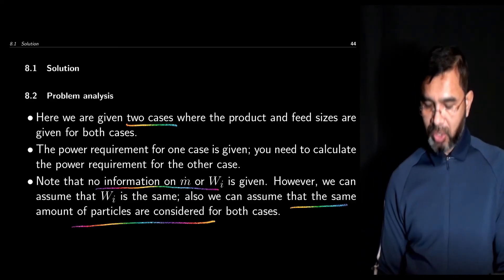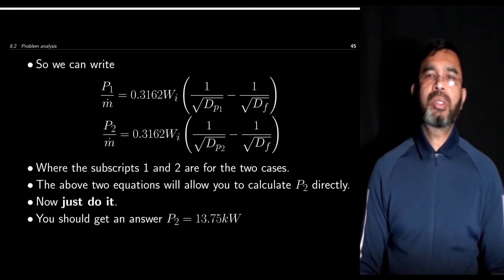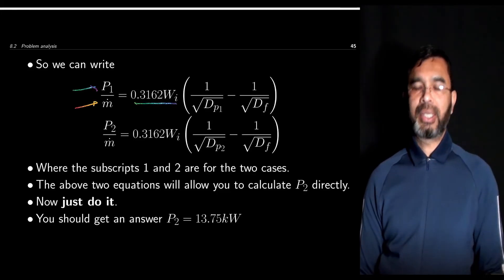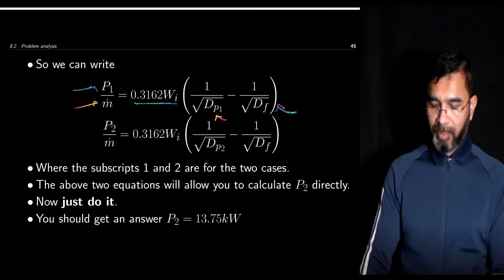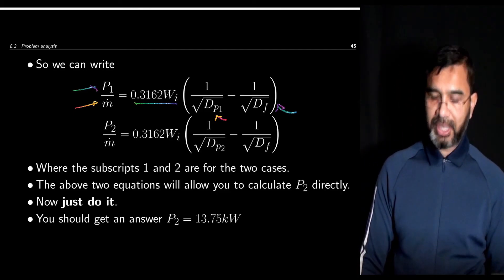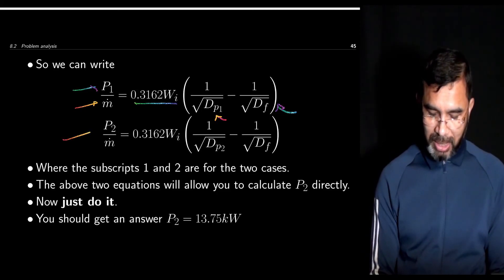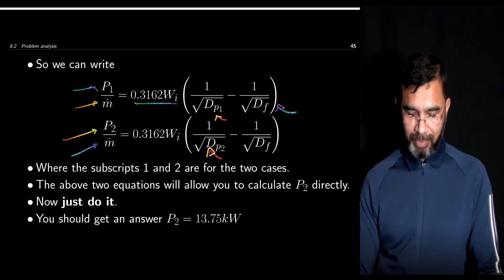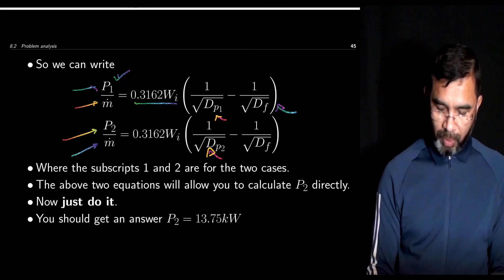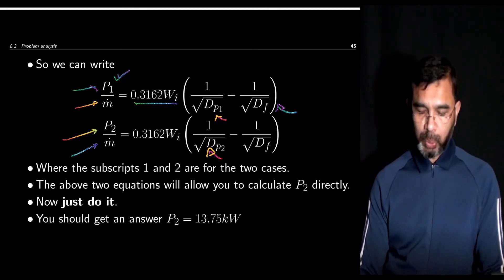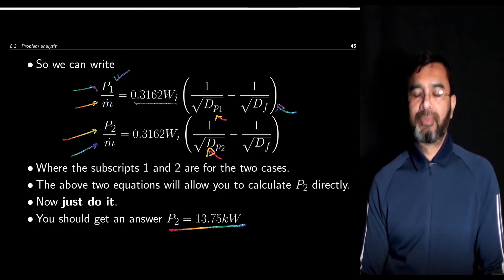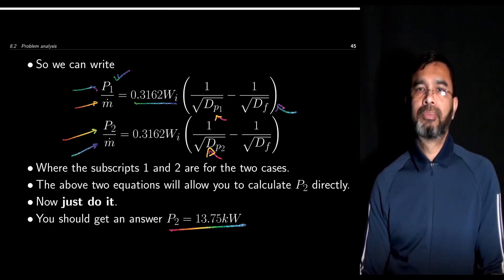With those valid assumptions, for Case 1: P₁/ṁ equals 0.3162·W_I times (1/√d_{P1} minus 1/√d_F). For Case 2: P₂/ṁ equals 0.3162·W_I times (1/√d_{P2} minus 1/√d_F). Since we know P₁, we simply divide these two equations to get P₂. Carrying out that calculation, you should get P₂ equals 13.75 kilowatts.